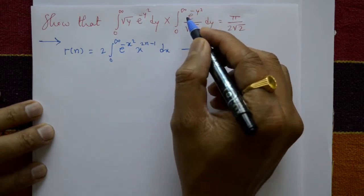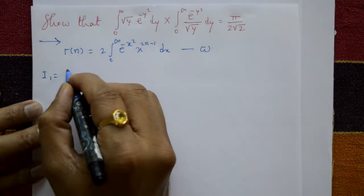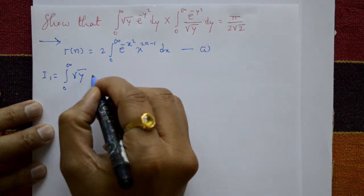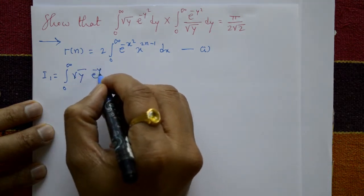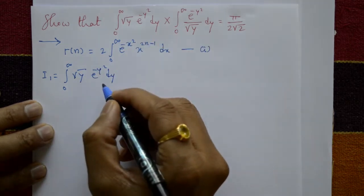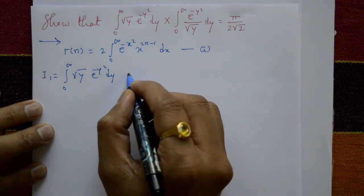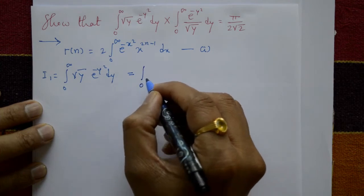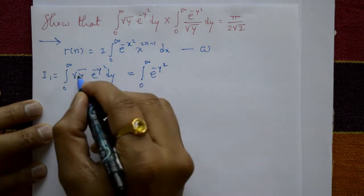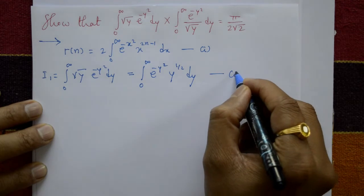The first integral is called I1 and the second is called I2. I1 equals the integration of 0 to infinity of root y times e raised to minus y squared dy. Converting to standard form, this equals the integration of 0 to infinity of e raised to minus y squared times y raised to 1/2 with respect to y. Call this equation number 2.